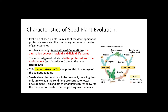Alternation of generations refers to the alternation between haploid and diploid life stages, detailed in the figure on the right if you need a refresher. The reduced gametophyte in seed plants is better protected from the environment — in this case, UV radiation — due to the larger sporophyte. This helps prevent dehydration and UV damage of the gametic genome. Seeds allow plants to be dormant, meaning they only grow when conditions are correct to foster development, and structural features allow for the transport of seeds to better growing environments.